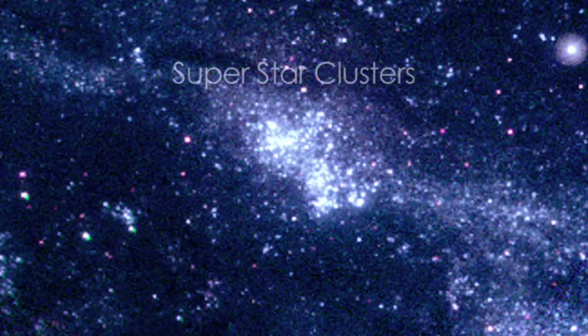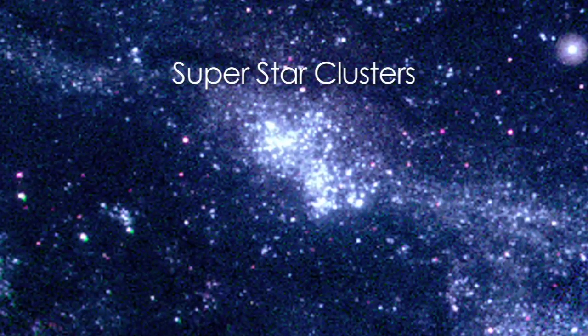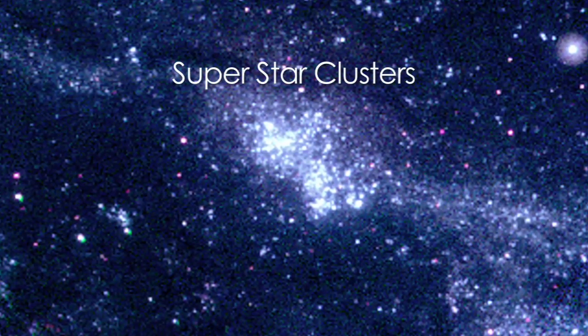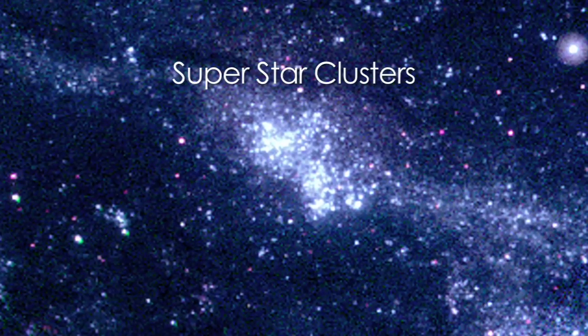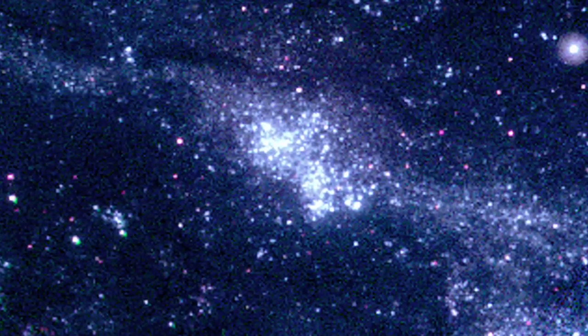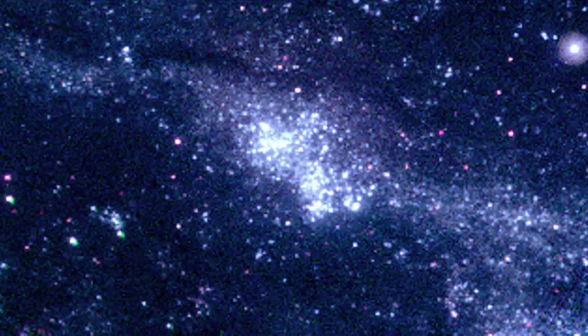In contrast, M31's spiral arms sparkle with dense clusters of hot, young blue stars. As in our own galaxy, the disk and spiral arms contain most of the gas and dust needed to produce new generations of stars.